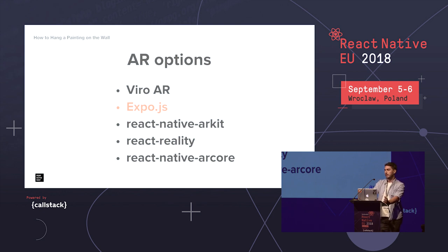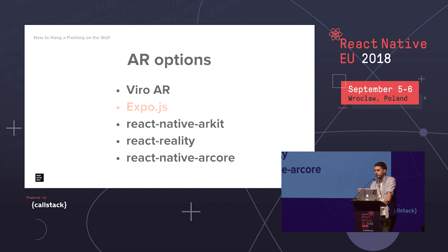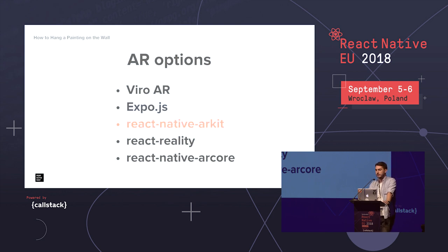The next option is Expo. They've made entry into mobile development so much easier for all of us, and they built their own AR solution. It's currently iOS only and uses ARKit bindings, along with Three.js — a famous JavaScript 3D library — to construct objects and a GL renderer to render them. But we could directly render our 3D objects without a proxy like GL, so this approach, while useful for Expo-based apps, isn't what we'll look at today.